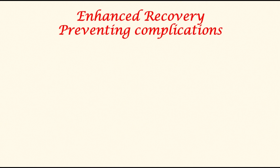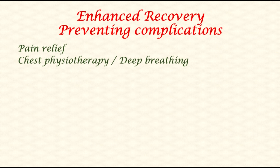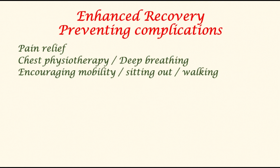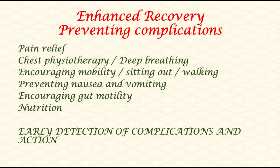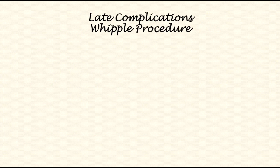Most progressive surgical units now offer patients a pathway called enhanced recovery. This prevents complications and fosters early return to activity. The main components include pain relief, chest physiotherapy and deep breathing to avoid chest infection, encouraging early mobility such as sitting out and walking, preventing nausea and vomiting by combining activity with medication, encouraging gut motility, and early nutrition. The most important component is early detection of complications and taking action at the appropriate time.